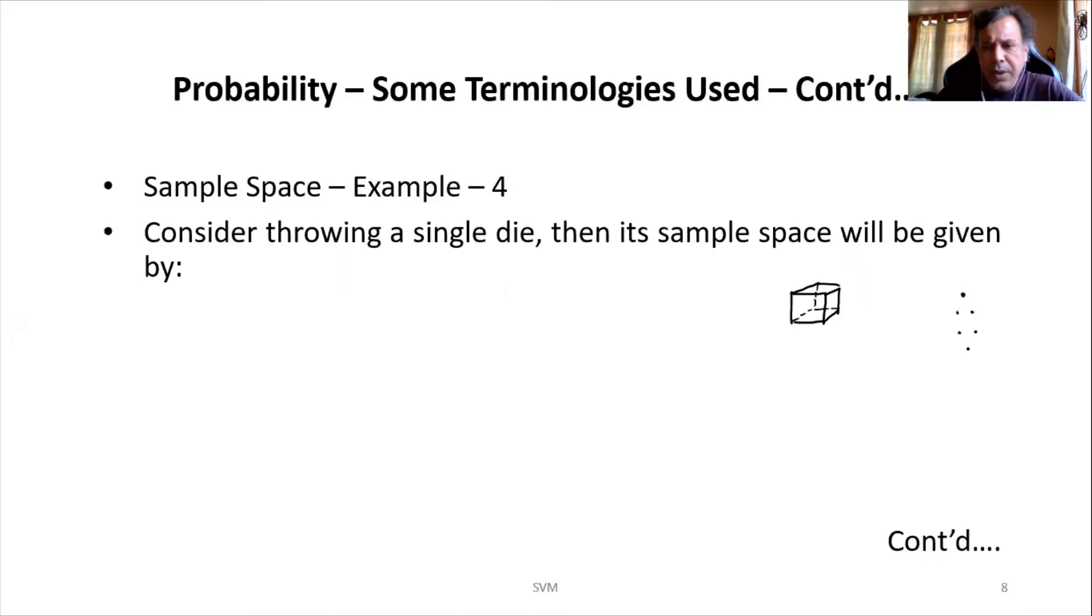Each face will have some dots—like one dot. Then one face will have two dots. Third face will have three dots. And then you have four dots. Then you have five dots, six dots like that, right? So if it is having one dot, you consider that as one. If it has got two dots, you consider it as two like that.